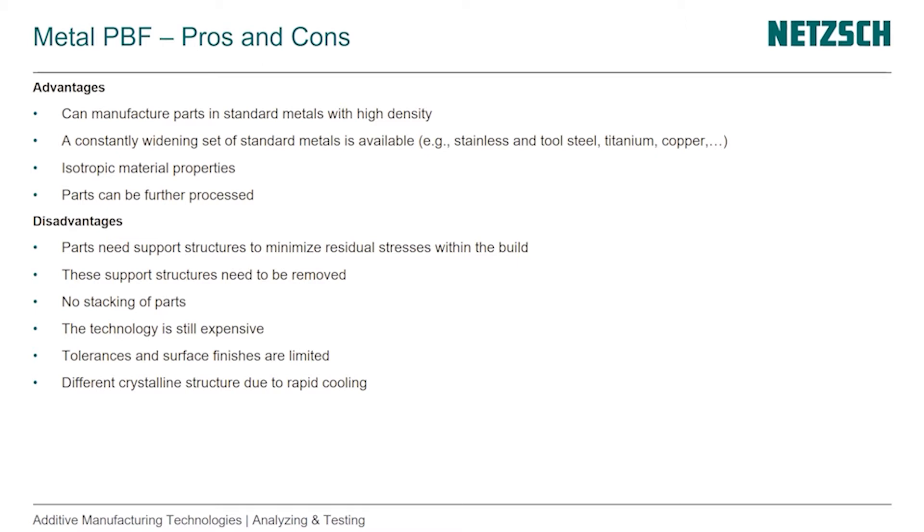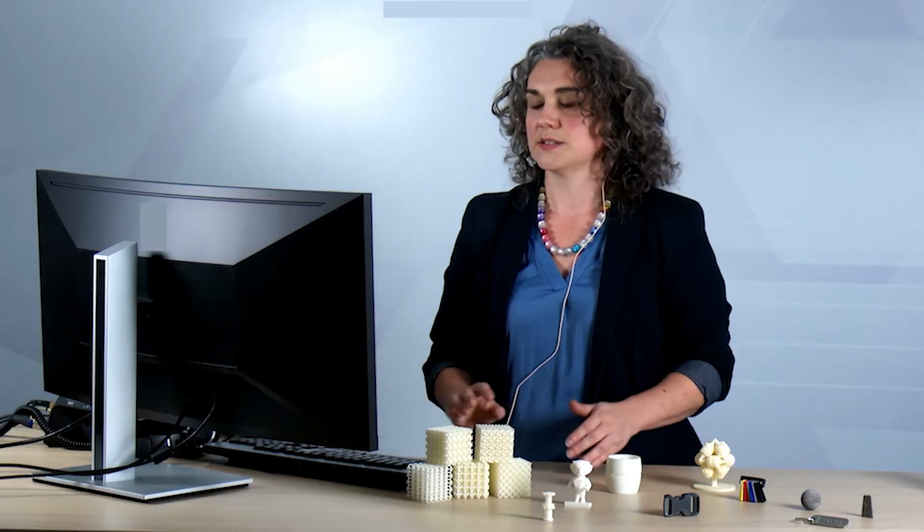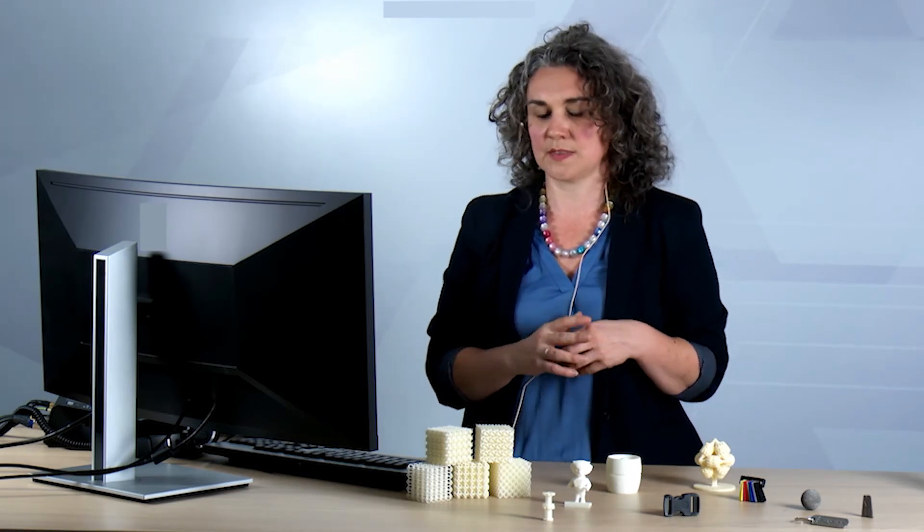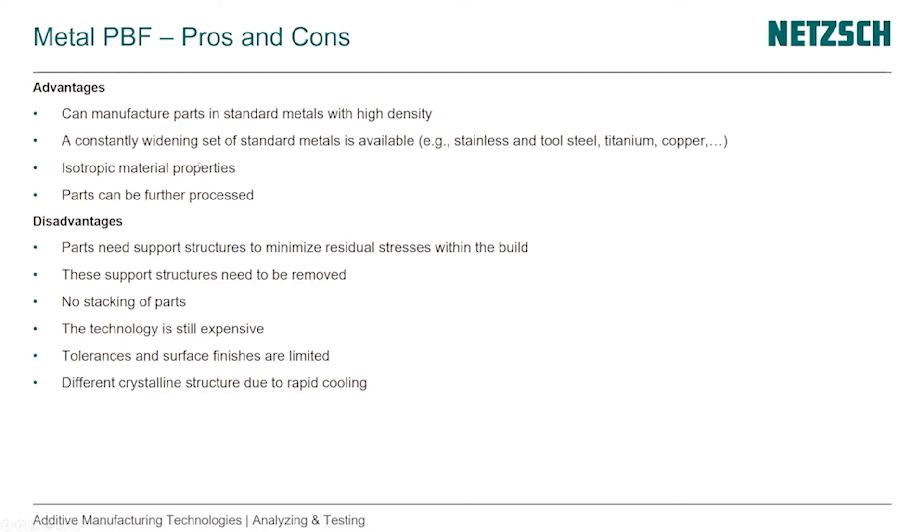So the advantages of metal powder bed fusion is that you can manufacture parts in standard metals with high density, so higher than 99.9 percent. The material selection is constantly widening much faster than for the polymers that are available—stainless steel, tool steel, titanium, copper, nickel, all kinds of alloys. The material portfolio is really widening every couple of weeks. You get isotropic material properties which is super important, and the parts can be further processed so you can do hybrid processes or in the process you're already doing some subtractive operations or you can do them afterwards.